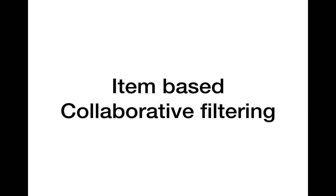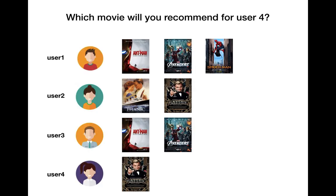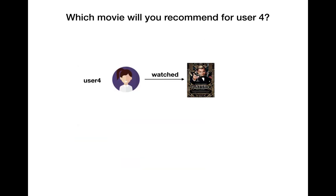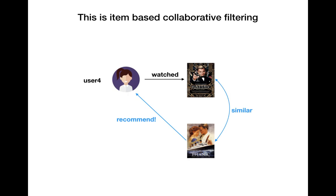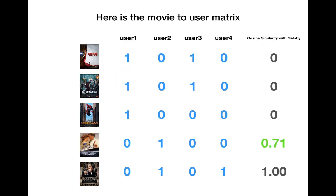Next, what is item-based collaborative filtering? Which movie will you recommend for user 4? We know that user 4 already watched Gatsby. And if we know that Titanic is a similar movie to Gatsby, why don't we recommend Titanic to user 4? This is item-based collaborative filtering.